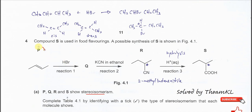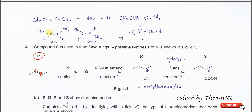Let's start with P. P is the alkene — it has a C=C double bond. This alkene has two different groups on each carbon: this carbon has one methyl and one hydrogen, and this carbon also has one methyl and one hydrogen. When each carbon has two different groups, it can form cis-trans isomers — that is, geometrical isomerism.